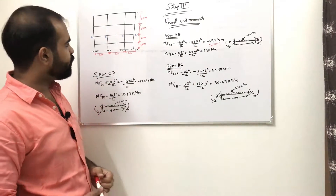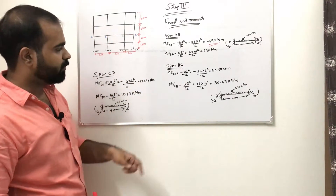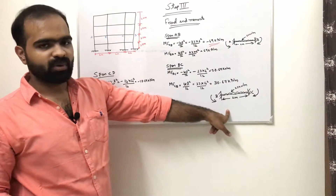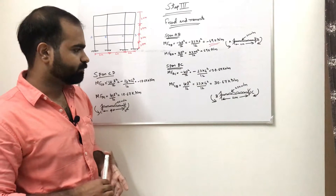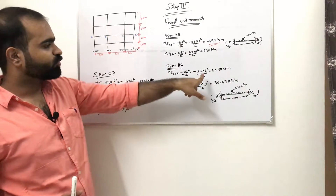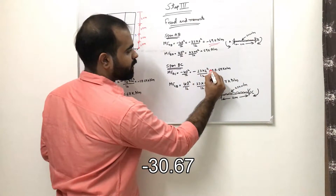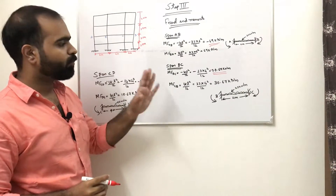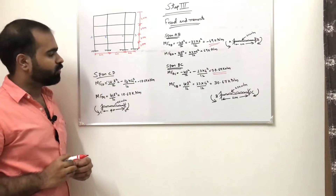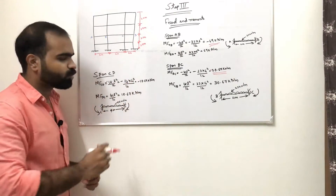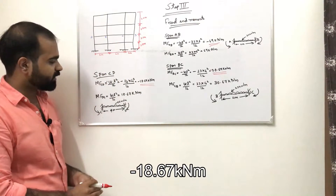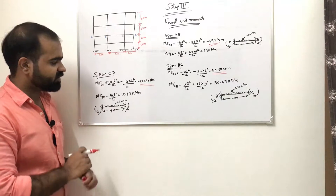For span BC: MF_BC = −WL²/12 = −23 × 4²/12 = −30.67 kNm (negative, anti-clockwise). MF_CB = +30.67 kNm (positive, clockwise). For span CD with dead load only (14 kN/m): MF_CD = −WL²/12 = −14 × 4²/12 = −18.67 kNm. MF_DC = +18.67 kNm.